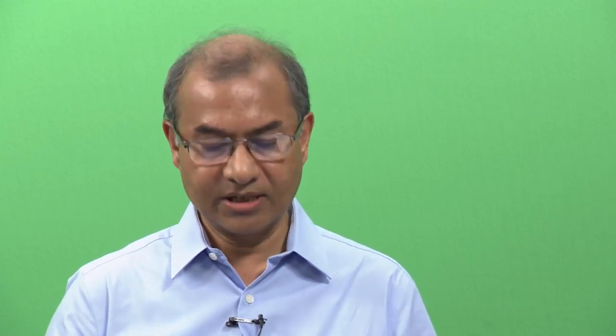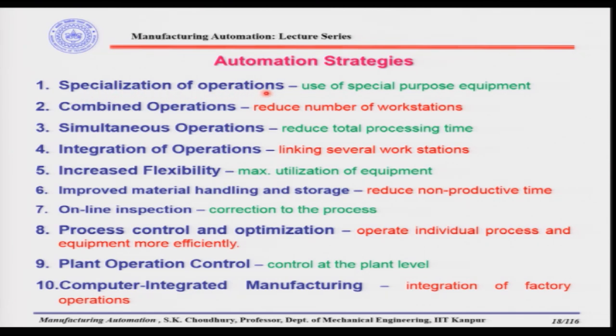Next, let us discuss some of the automation strategies which should be taken up so that the productivity and production rate can be enhanced in manufacturing processes. The first point is the specialization of operation — the use of special purpose equipment which will be able to perform one job precisely. That machine will be specially used for that particular operation, and so it is called a specialized machine.